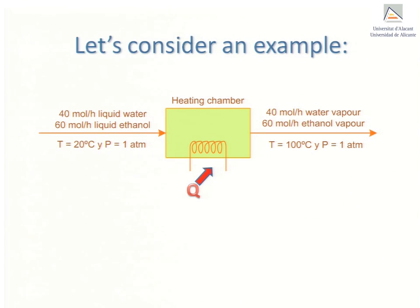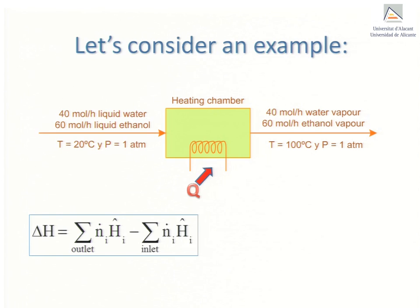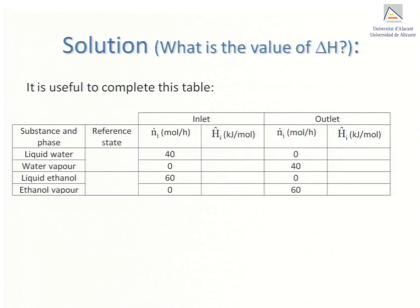The delta H term in an energy balance on open systems can be calculated using the equation shown where N dot I is the molar flow rate of component I and H hat I is its molar enthalpy. This discussion is aimed at first year students of chemical engineering. The presentation will be structured in a way that cultivates a systematic approach to solving problems of this kind. Therefore, to help us systematize the calculation, it will prove useful to record all relevant information in a table.